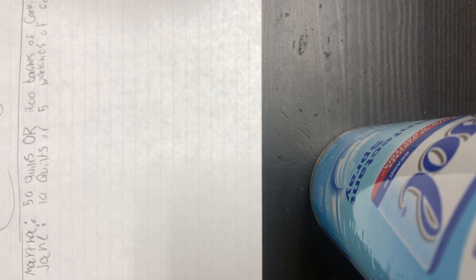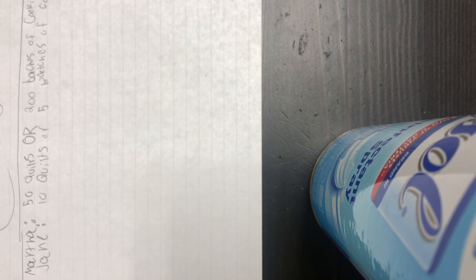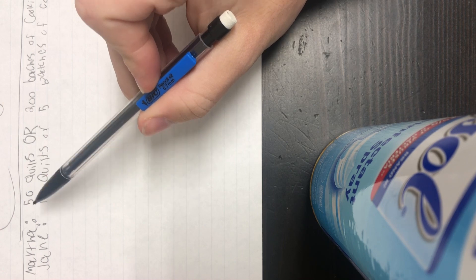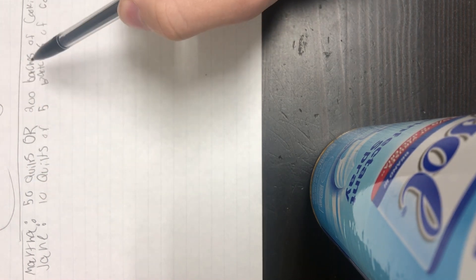Question 3A. Martha can produce 50 quilts or 200 batches of chocolate chip cookies in a month, while Jane can produce 10 quilts or 5 batches of chocolate chip cookies in a month. Distinguish between comparative and absolute advantage. Blank has an absolute advantage in both goods. An absolute advantage is whenever you are able to produce more — it has nothing to do with opportunity cost. Martha can produce both more quilts and more batches of cookies, so the answer is Martha.